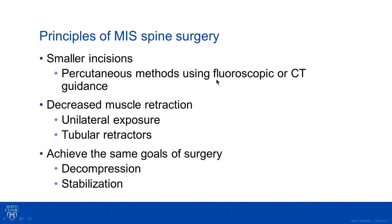The principles of minimally invasive spine surgery include smaller incisions made possible by percutaneous methods using fluoroscopic or CT guidance, resulting in decreased muscle retraction. Instead of one large midline incision with bilateral exposure, you can use unilateral exposure through tubular retractors and still accomplish a bilateral decompression. The goal is to achieve the same objectives as open surgery — decompressing the neural elements and stabilizing the spine.